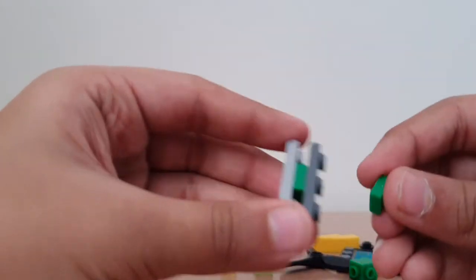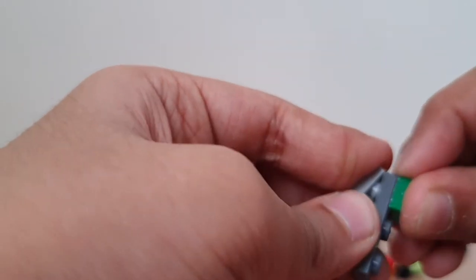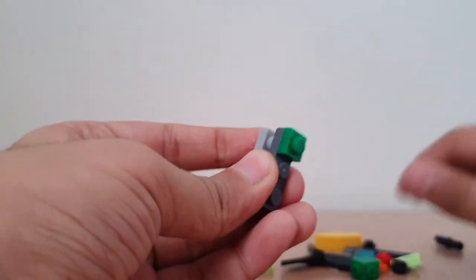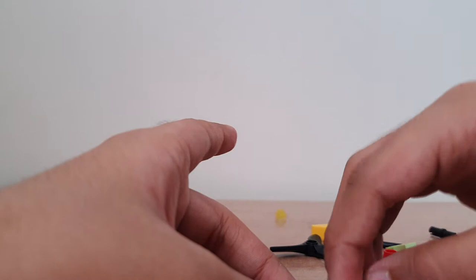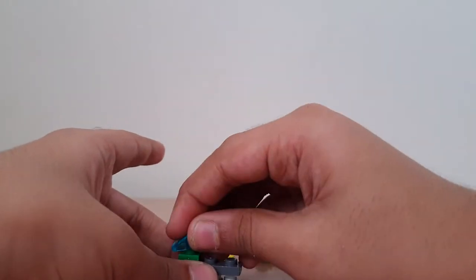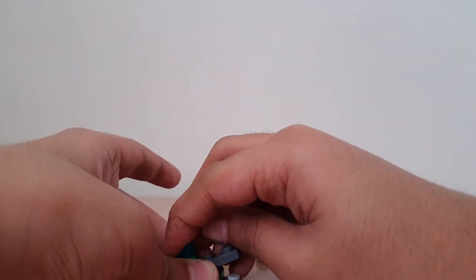And another one, 1x1 plate square. You can see it's kept right here. Add the 2x3 plate.